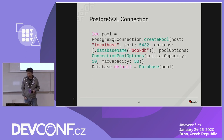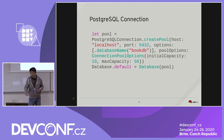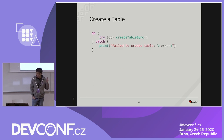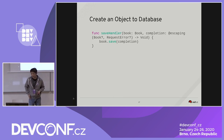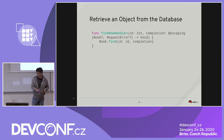You also have integration with databases. Here I'm showing a PostgreSQL connection: you call the PostgreSQL connection, create a port, specify the host name, port number, and database name, then call database.default to start the database on that port. Creating a table is straightforward — once you have a database object called Book, you can call Book.createTableAsync. Once you have the table, you can create objects inside it by passing in a closure and calling Book.save with a completion handler. Looking up an object is similar: call Book.find, pass in the object ID and a completion handler.